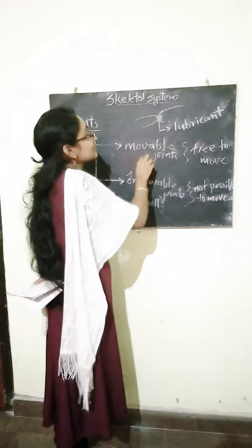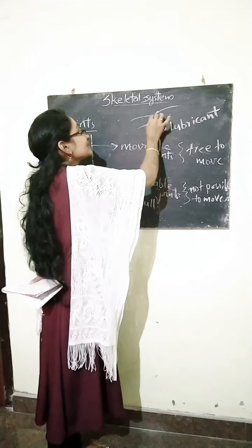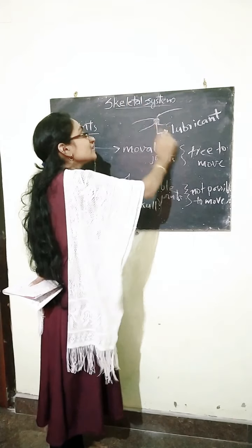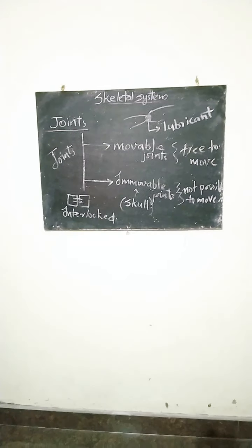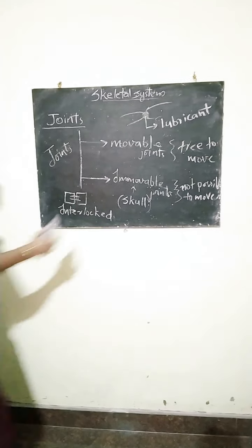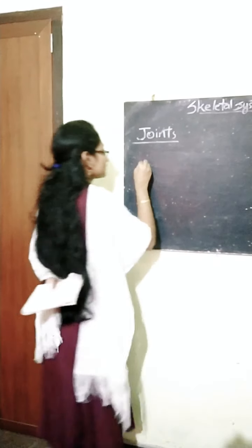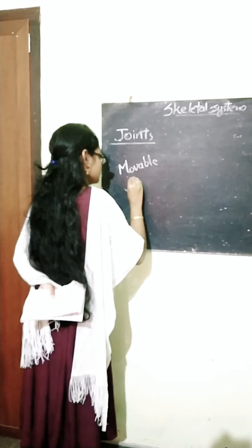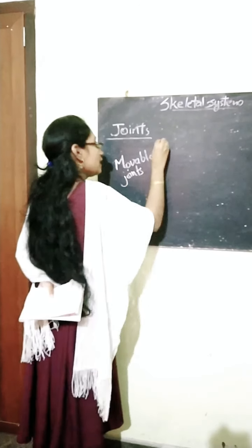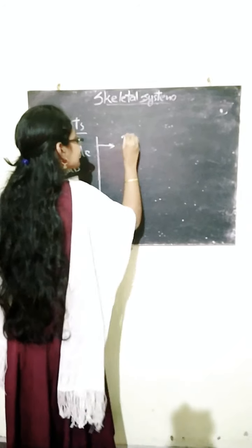For movable joints, they are free to move, and in between the bones there is a fluid called lubricant. Now we are going to classify the movable joints into four types. Movable joints are classified into four.